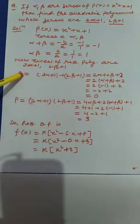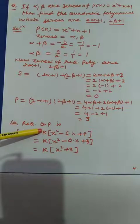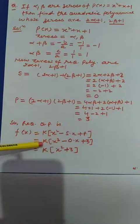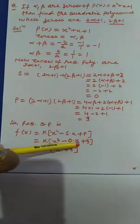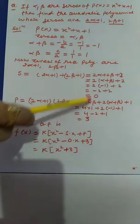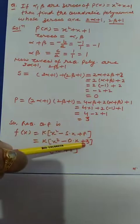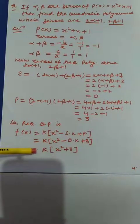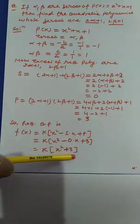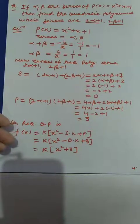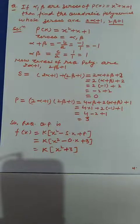Now I replace these values in the formula: p(x) equals k times [x² minus (sum of zeros)·x plus (product of zeros)]. Substituting sum of zeros equals 0 and product of zeros equals 3, I get k·(x² minus 0·x plus 3), which simplifies to k·(x² plus 3). Here k is an arbitrary constant that can take any value. By replacing a particular value for k, we can get a specific quadratic polynomial for the given condition.